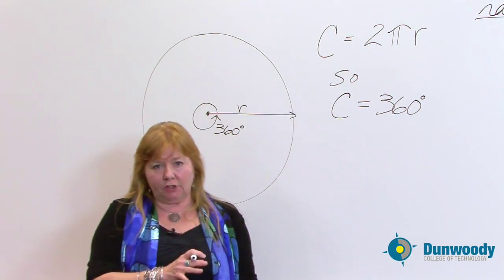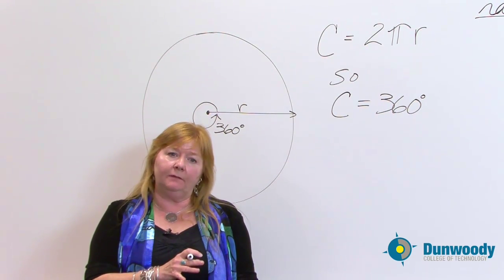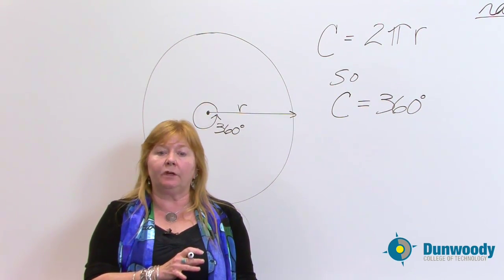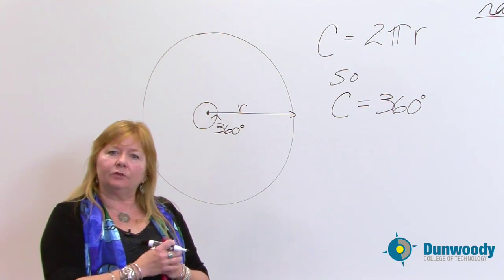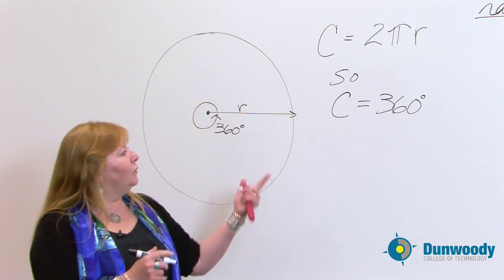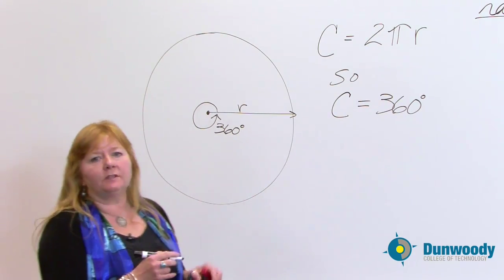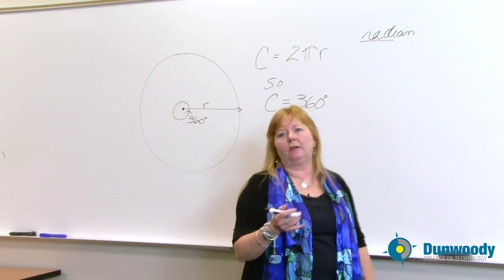There are times when we want to look at degree measure to help us get work done in math. There are other times when we strictly want to look at the radian measure, using the radius to help us understand something in math. So with that, let's look at other ways we need to start to cut up the circle and understand it.